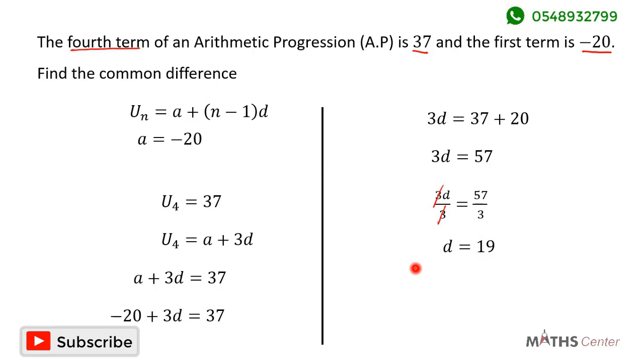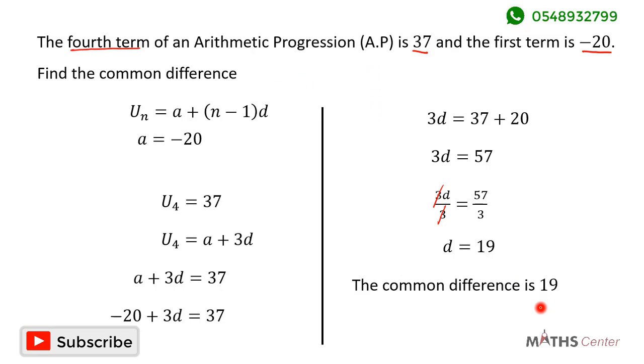D is the common difference, so the common difference of the arithmetic progression is 19.